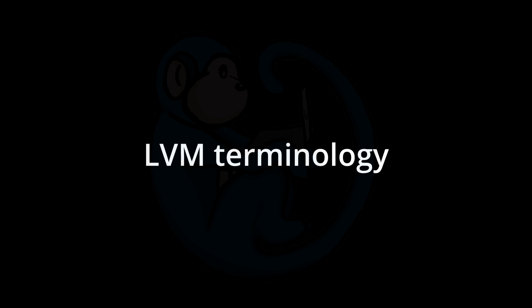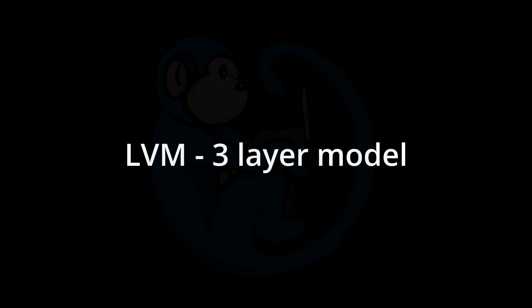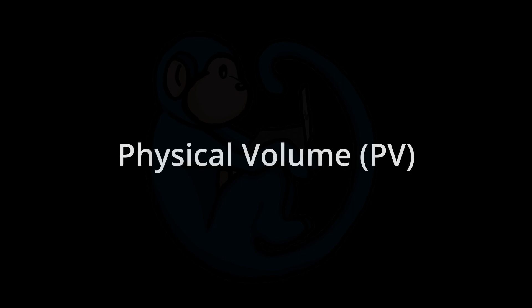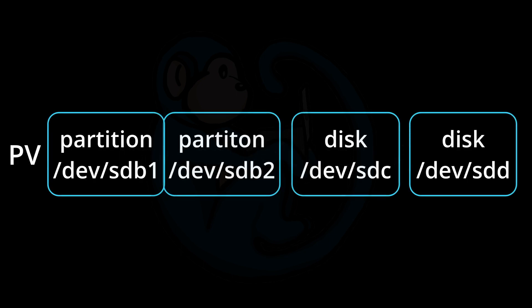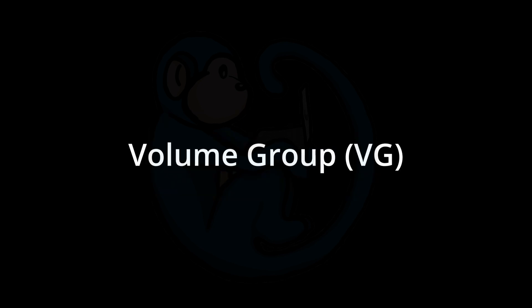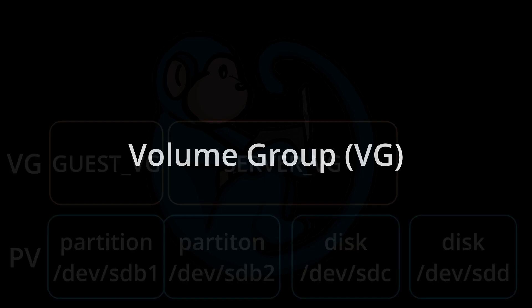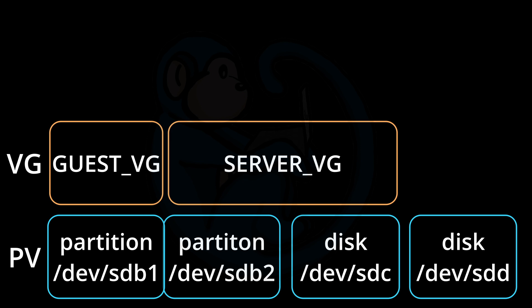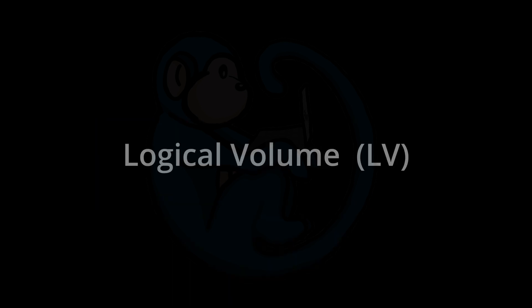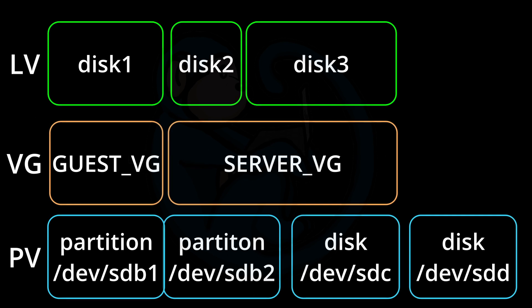Let's start by laying down some concepts and terminology. There are basically three layers in the LVM model. The first layer is the physical volume layer — these are your physical disk or disk partitions, such as /dev/sdb2, /dev/sdc, etc. These are the building blocks for the next layer up, which is the volume group. Each volume group is comprised of one or more physical volumes, and most of the commands you'll use apply to a specific volume group. On top is the logical volume, which is created from volume groups. These volumes are what you'll ultimately end up mounting on your system to be used as storage for the users.